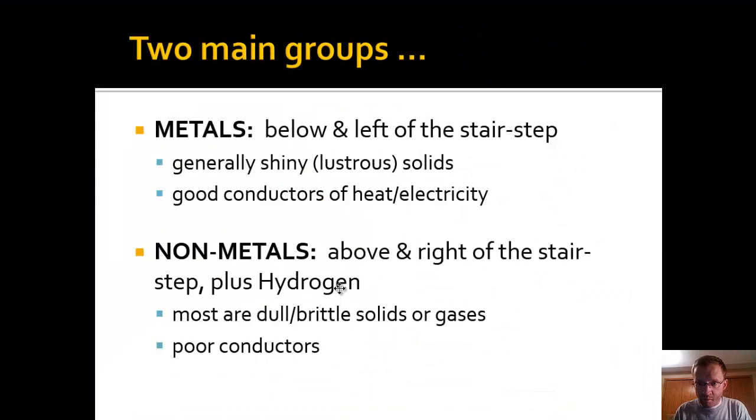Next thing is to give you a general definition or differences between metals and non-metals. Metals, as we just marked on our table, are below and left of that stair-step line. They're also generally shiny, or the fancy word we use for shiny is lustrous. At room temperature, they tend to be solids. The only exception is mercury. Mercury is a liquid at room temperature and it's a metal. Mercury, being a liquid, allows it to be a conductor that is part of old-fashioned thermostats. Metals also tend to be good conductors of heat and electricity.